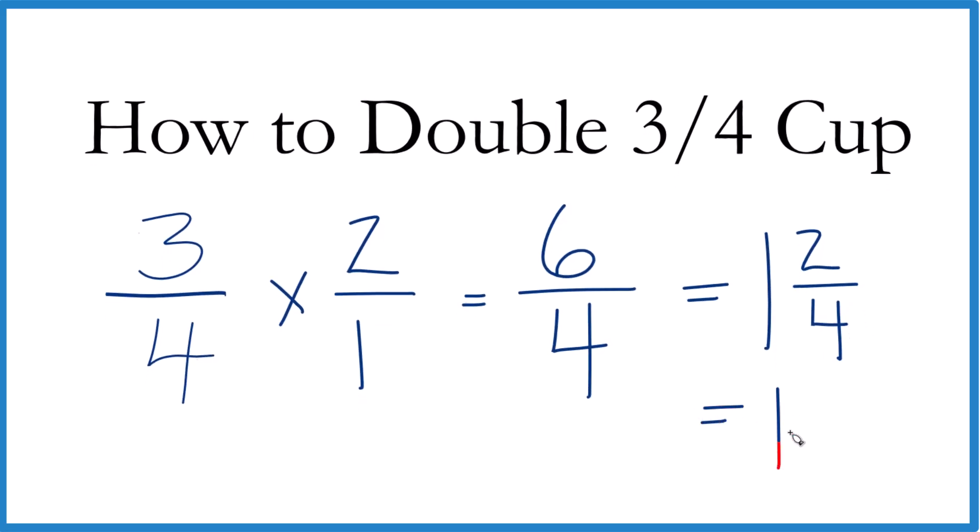So any way you do it, when we double three-fourths of a cup, we get one and one-half cups. It's Dr. B. Thanks for watching.